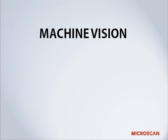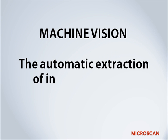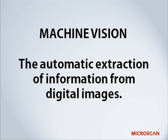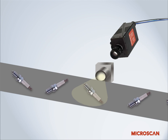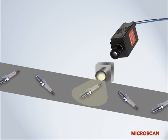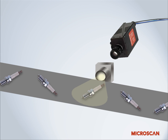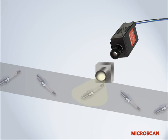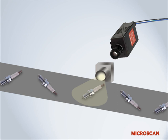Let's get started with a definition of machine vision. Machine vision is defined as the automatic extraction of information from digital images. Let's look at a very basic breakdown of a typical machine vision process. First, you have a manufacturing production line with a steady flow of objects. Then, you have a camera or optical system trained on the line.